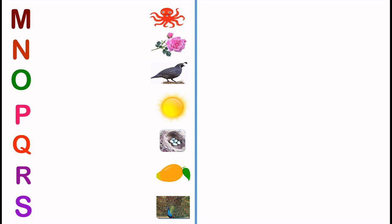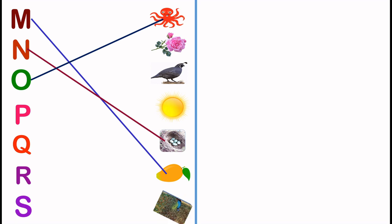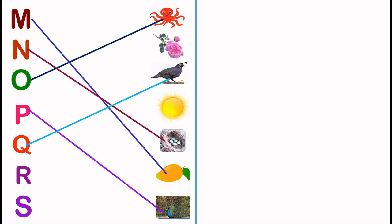M, M for mango. N, N for nest. O, O for octopus. P, P for peacock. Q, Q for quail. R, R for rose. S, S for sun.